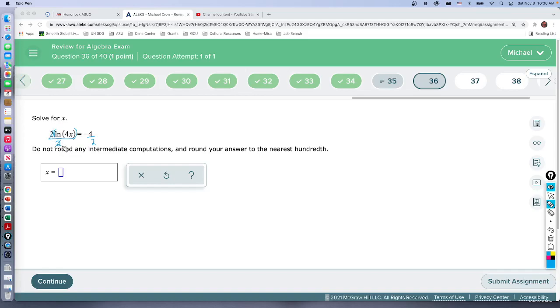And negative four divided by two is going to be negative two. So I'll give myself some space here. So this is the natural log of 4x equals negative two.